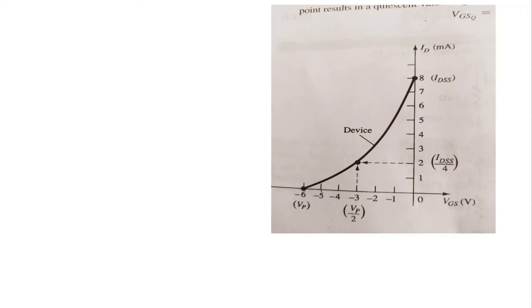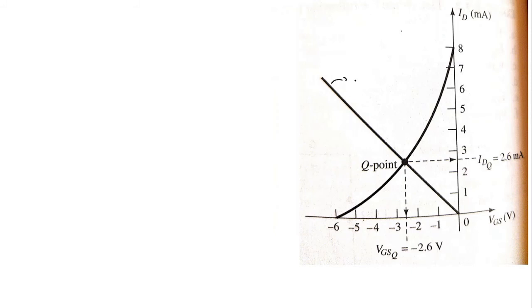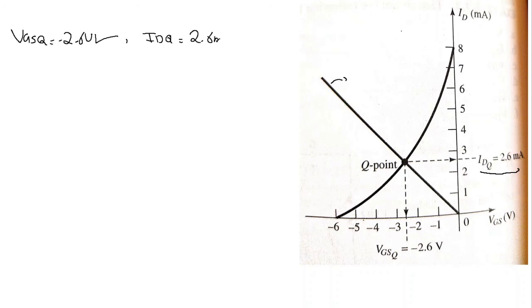Plotting these three points gives the device characteristic curve. Now I superimpose the network characteristic line on the device characteristic curve. The intersection of the two curves gives the Q-point (quiescent/operating point). From the graph, IDQ = 2.6 milliamperes and VGSQ = -2.6 volts.